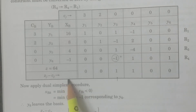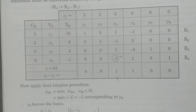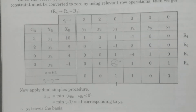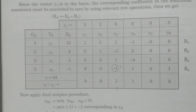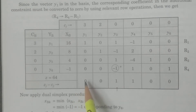You have to concentrate on ZJ − CJ values. After calculating the net evaluations, you have to apply the dual simplex procedure. One of the most important crucial steps is that the basic vector must be converted to 1, 0, 0, 0 form using the relevant row operation. After that, apply the dual simplex procedure.